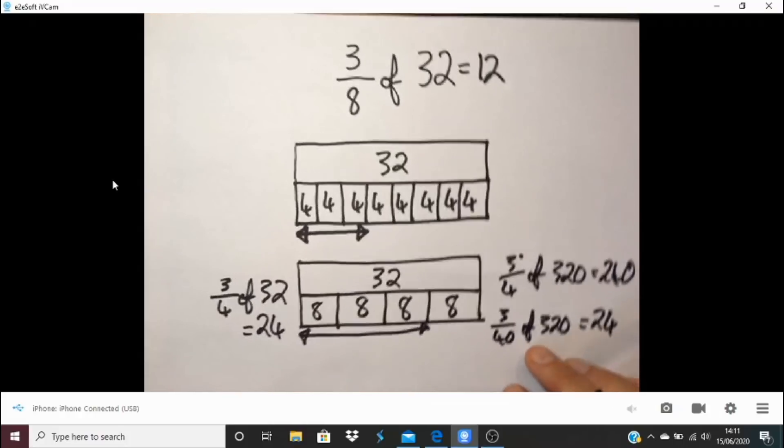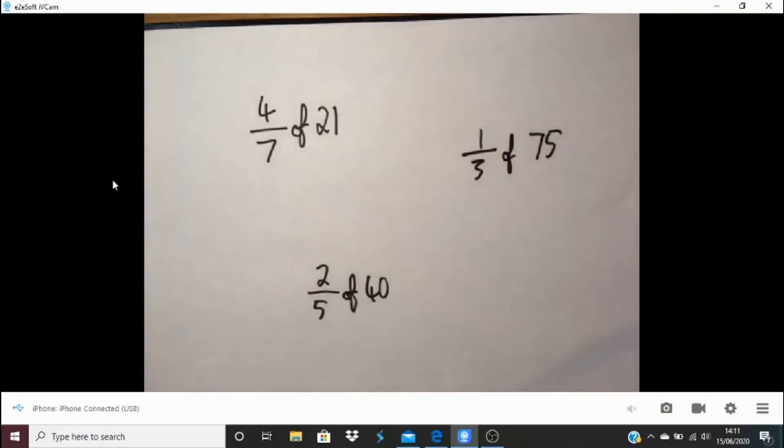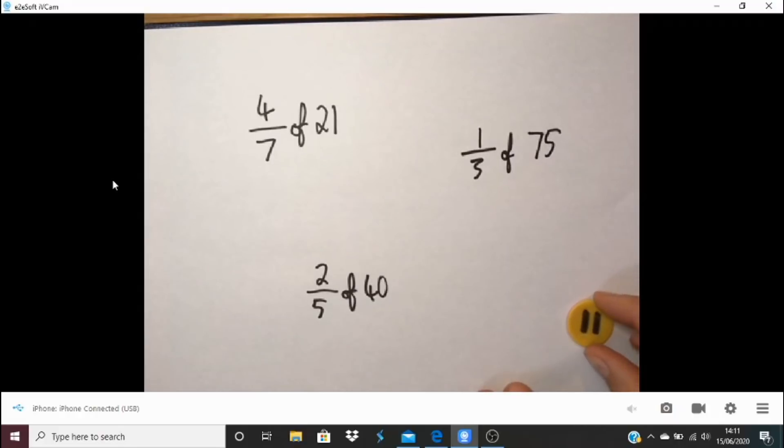Your challenge is as follows. I'm going to give you three calculations to have a go at. One level, see if you can answer them. And then the second level is see if you can find related facts that stem from them. So if I know, we're after four-sevenths of 21, a third of 75, and two-fifths of 40. So if you know that, what other related calculations can you come up with? Pause the video and have a go.